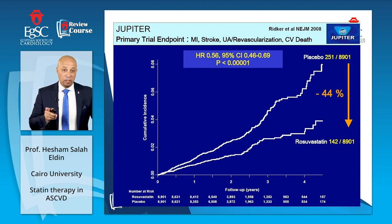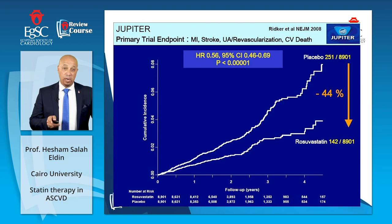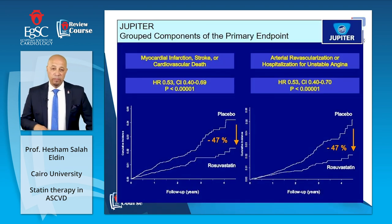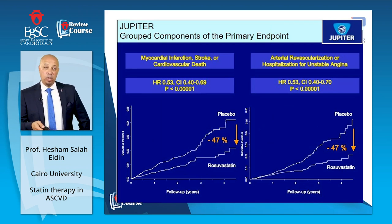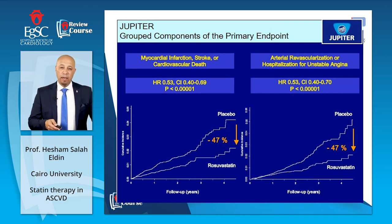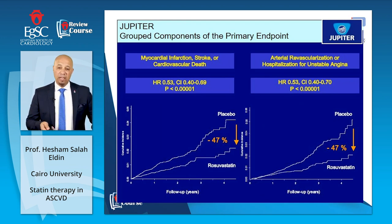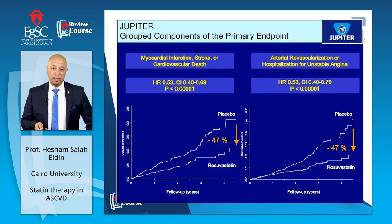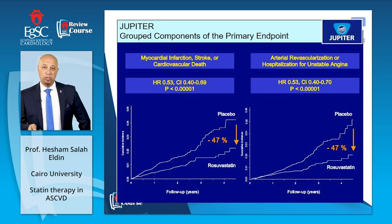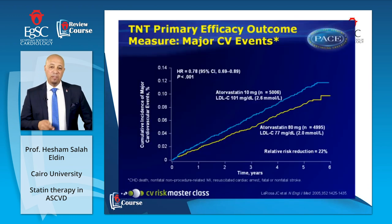Patients had an LDL cholesterol below 130 mg/dL and high-sensitive CRP of 2 mg/L or more. Secondary endpoints of myocardial infarction, stroke, or cardiovascular death were also reduced by 47%, and arterial revascularization or hospitalization for unstable angina was also reduced by 47%. Quite impressive results.